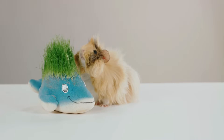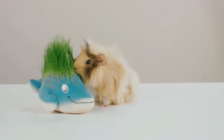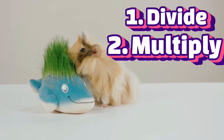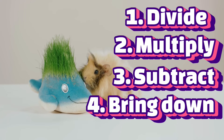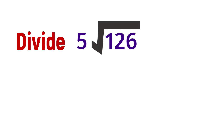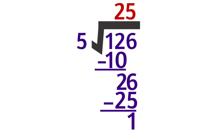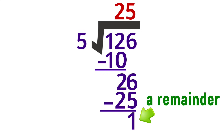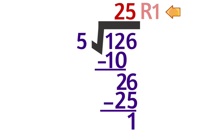The four steps in long division are divide, multiply, subtract, bring down. When we start, we always try to divide the first digit of the dividend. But if the divisor doesn't fit — like in our last example — we look at the first two digits instead. And sometimes, when we finish dividing, there's a number left over — that's called a remainder. We write the remainder up here next to the quotient with the letter R to show that the dividend didn't divide evenly. And that's how long division works.